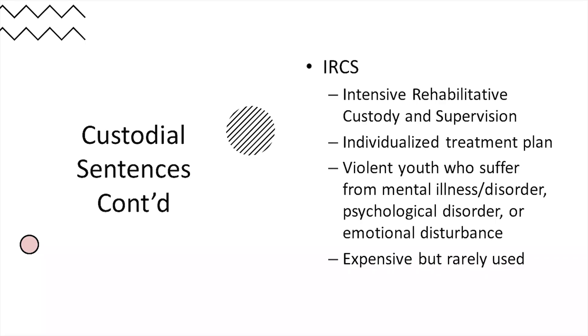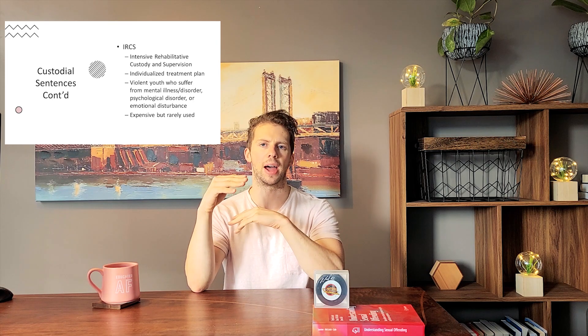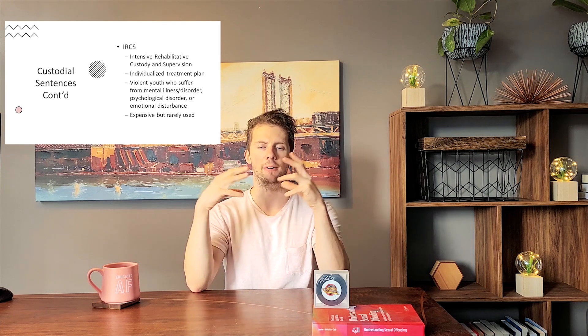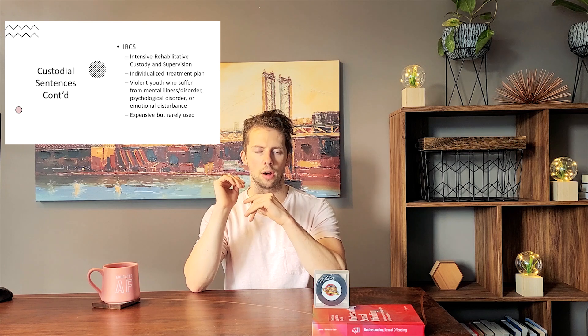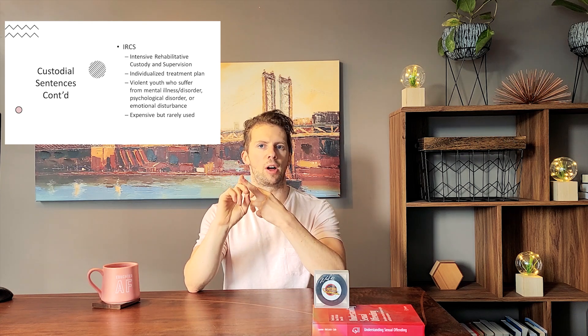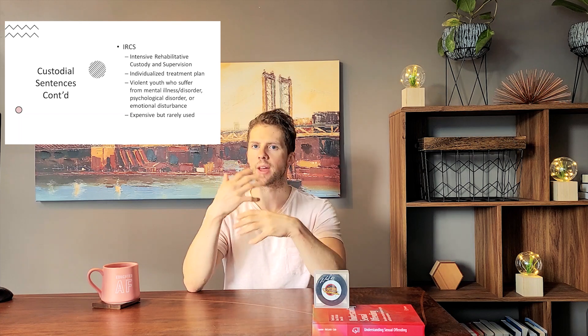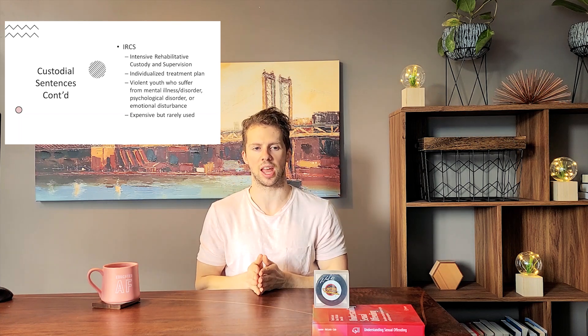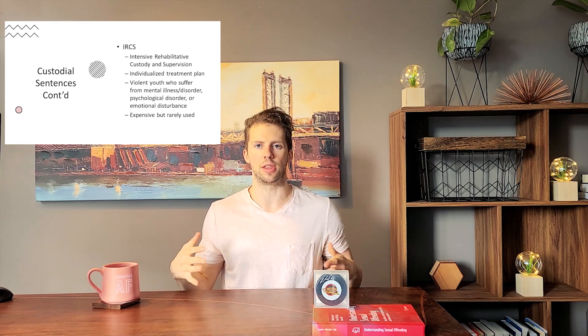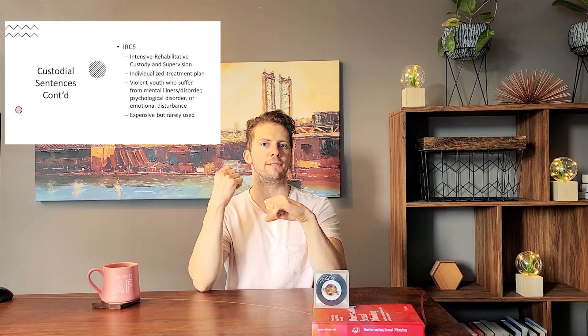The third type of custody sentence under the YCJ is the Intensive Rehabilitative Custody and Supervision (IRCS) order. This isn't elected by a judge but is instead recommended by the provincial director of youth custody. The IRCS order is reserved for youth who have committed a violent offense and suffer from a mental illness or some form of emotional disturbance — not necessarily a formal diagnosis, but some indication that a mental disorder may be present.